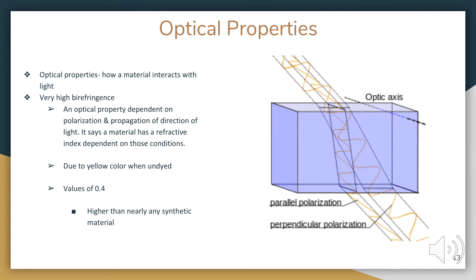The optical properties of Kevlar include extremely high birefringence, which is due to Kevlar being yellow in its natural state. It has a birefringence value of about 0.4, which is nearly higher than any other synthetic material. No matter what strain of Kevlar you have, it will vary within this range but will still be higher than almost any synthetic material.